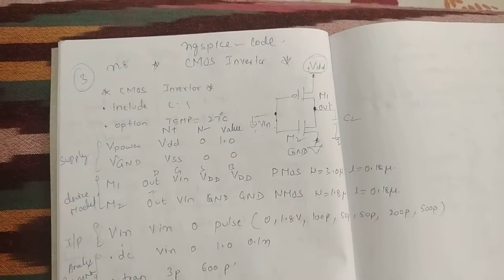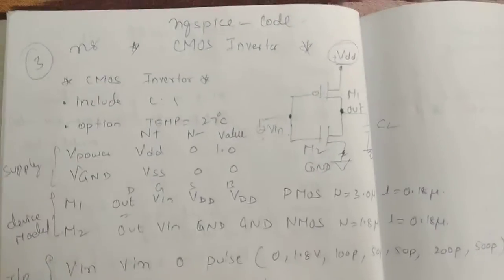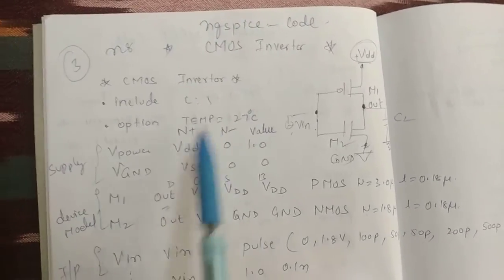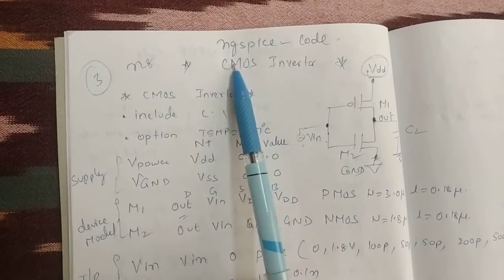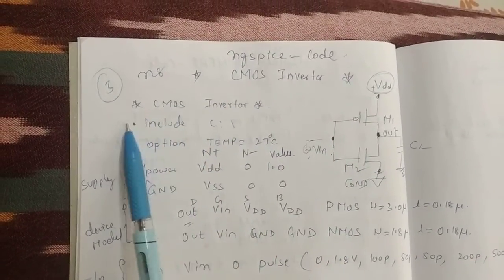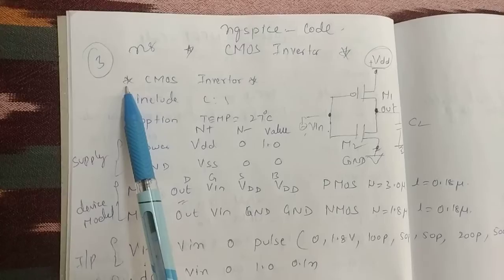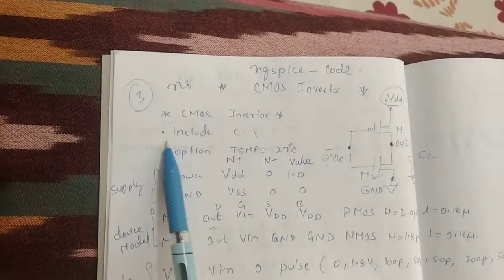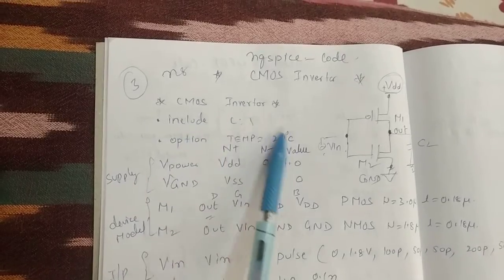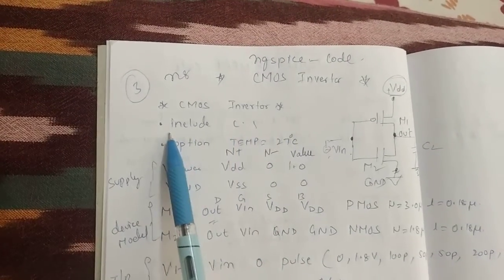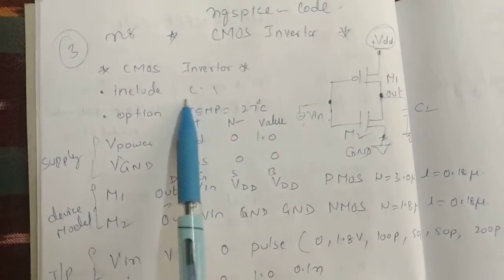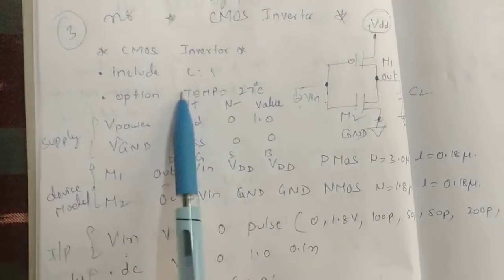Okay, in this video we learn how to write SPICE code for CMOS inverter. Start with a comment: CMOS inverter. Then you have to include your model file, so write dot include and give the path, the full path.